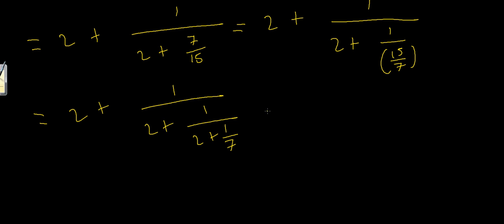So our continued fraction for 89 over 37 is 2, 2, 2, 7. And that's 89 over 37.